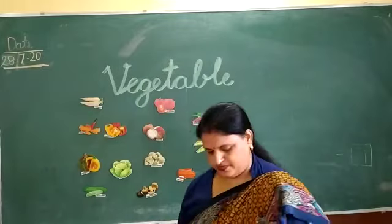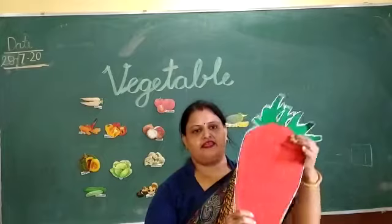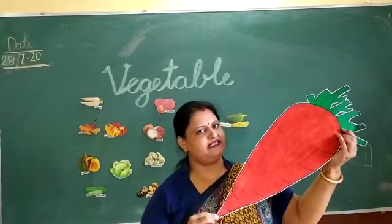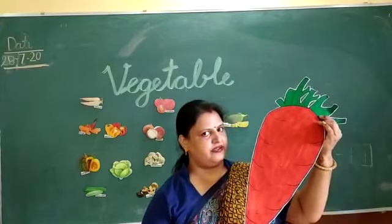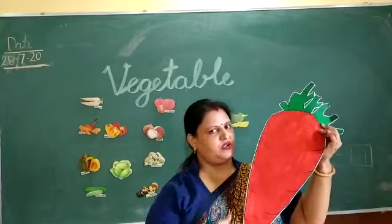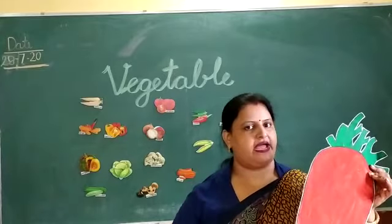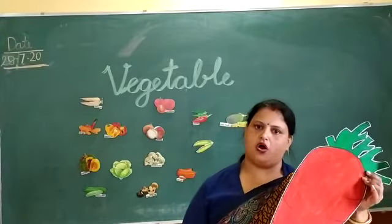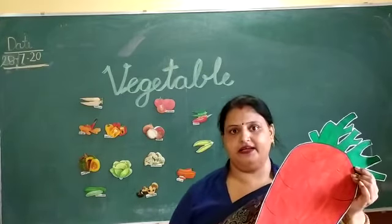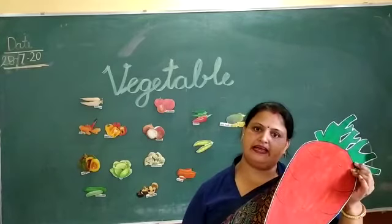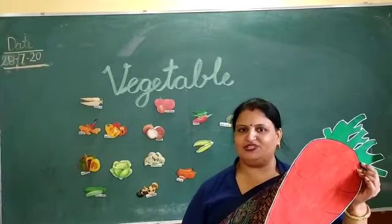Now, which vegetable is this? Carrot. Which vegetable is this? Carrot. What is the color of carrot? Red. Carrot has two colors — orange and red. Orange color is one color and red color is another. And what does the vegetable make? Vegetable pickle, variety, stuff, fried, and sweet dish.